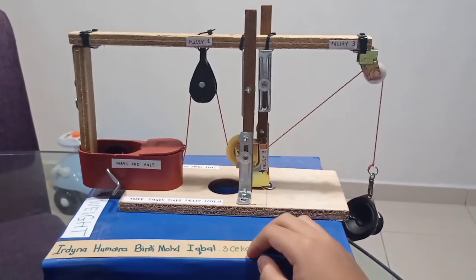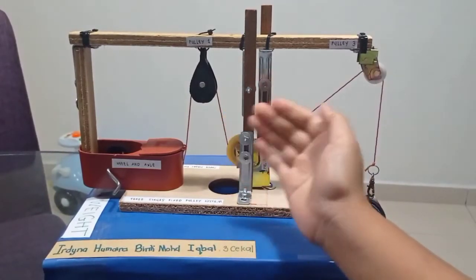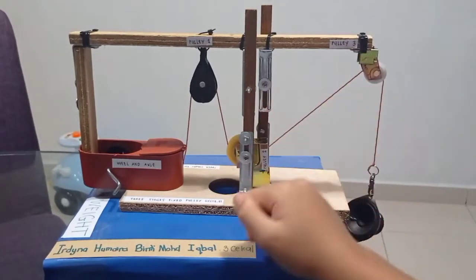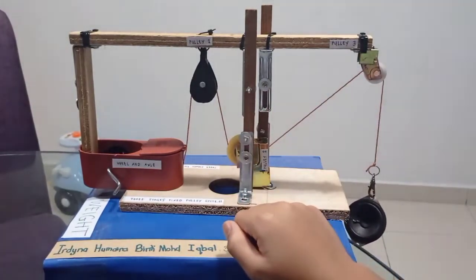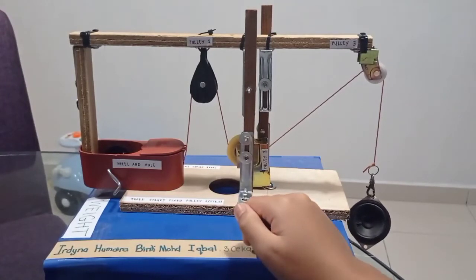Then this system consists of three pulleys, which is pulley 1, 2, and 3. These three pulleys help to reduce force during lifting the load.